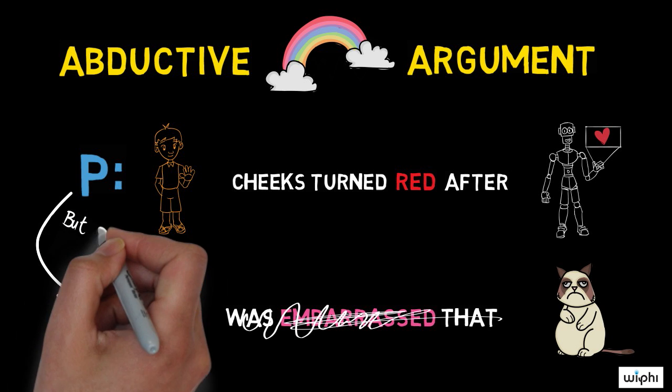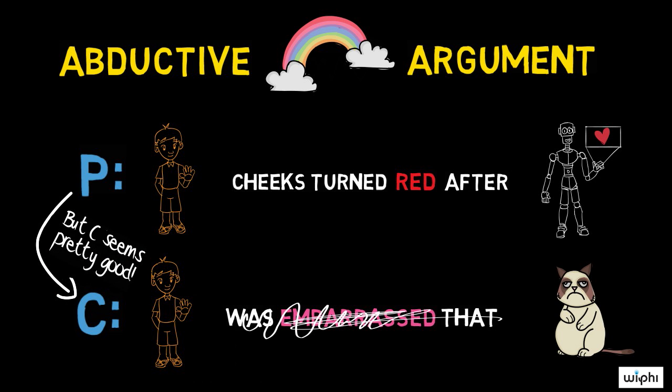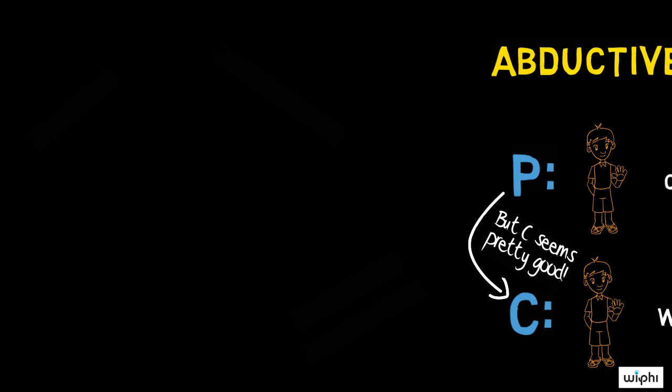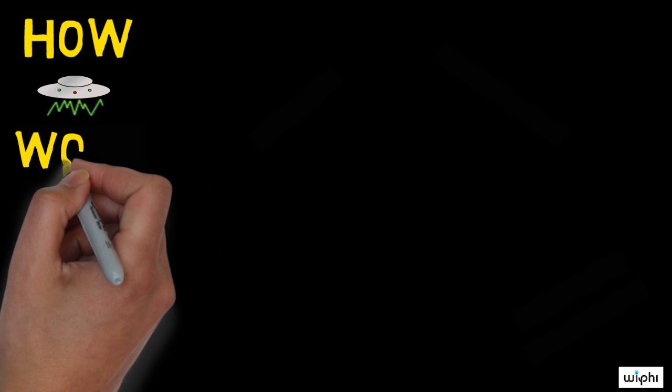Nonetheless, given your background knowledge, C seems like it's the best explanation for P, or at least it's a contender. If it is, then P gives you good reason to believe C. That's how abductive arguments work.